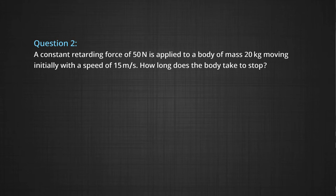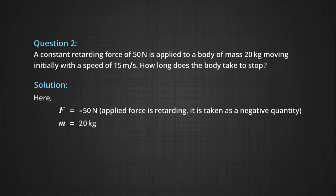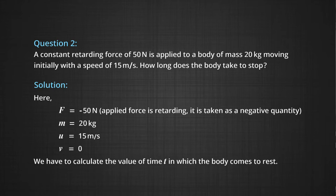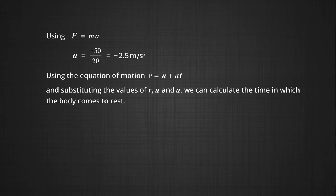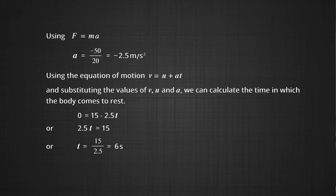Question 2: A constant retarding force of 50 Newton is applied to a body of mass 20 kg moving initially with a speed of 15 m/s. How long does the body take to stop? Here, F = −50 N, M = 20 kg, U = 15 m/s, V = 0. Using F = Ma, A = −50/20 = −2.5 m/s². Then using V = U + At: 0 = 15 − 2.5t, so t = 15/2.5 = 6 seconds. The body takes 6 seconds to stop.